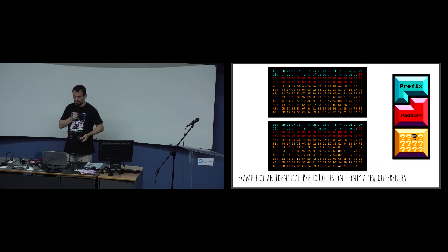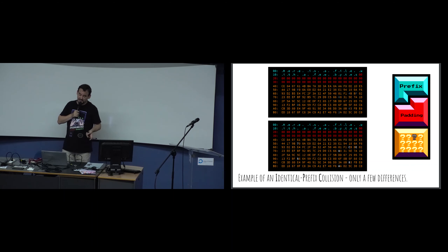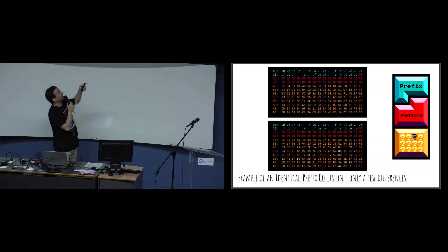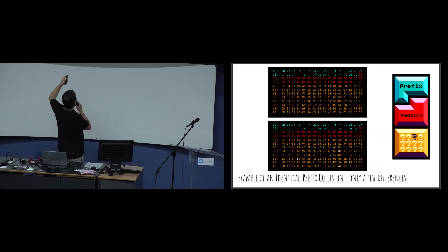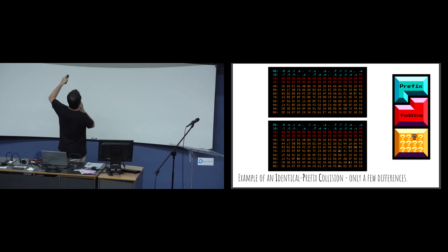Here is an actual example: a file with a few bytes, then null padding, and you can see the tiny differences. Full of randomness with very tiny differences at these offsets - always the same offsets. It's two blocks of 64 bytes and the differences are at the same offset on both blocks.